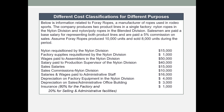Salesmen are paid a base salary for representing both product lines and are paid a 5% commission on sales. Assume 4A Ropes produced 10,000 units and sold 8,000 units during the period. Now we see a list of costs.